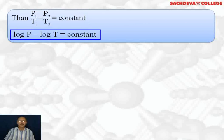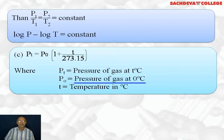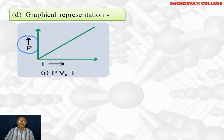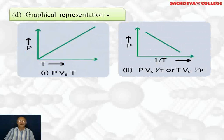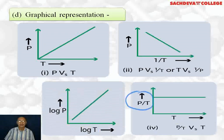We can also write log P minus log T equals a constant. Or Pt = P0 × (1 + T/273.15), where Pt is pressure at T°C and P0 is pressure at 0°C. For the graphical representation: pressure is directly proportional to temperature, giving a straight line, plotted at constant volume. The graph between P and 1/T shows they are inversely proportional. Log P versus log T are directly proportional, giving a straight line. And if we plot T versus P/T, P/T remains constant as temperature varies. Since all these graphs are plotted at constant volume, they are known as isochores — meaning same or constant volume.